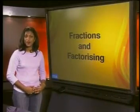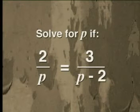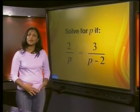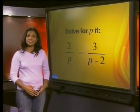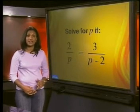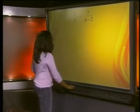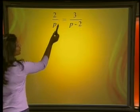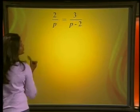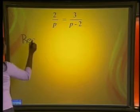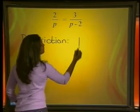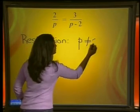Let's look at this first example. Solve for p if 2 divided by p is equal to 3 divided by p minus 2. Before we solve for p, let's use what we discussed in a previous lesson about restrictions on the denominator. On the left-hand side, we have 2 divided by p. We know that the value of p may not be equal to 0, so our restriction is that p is not equal to 0.